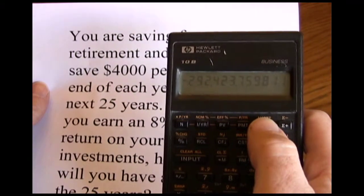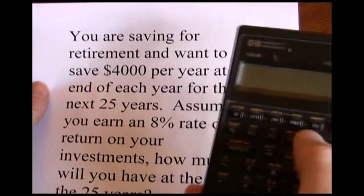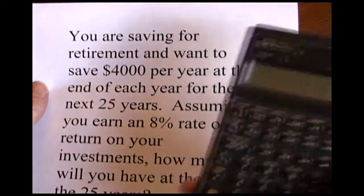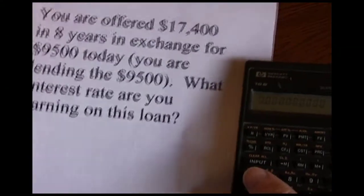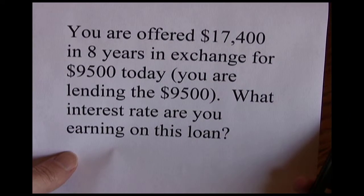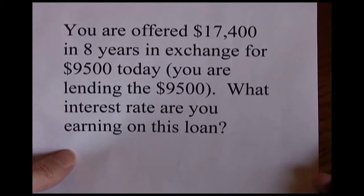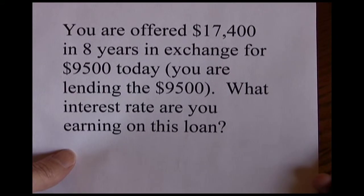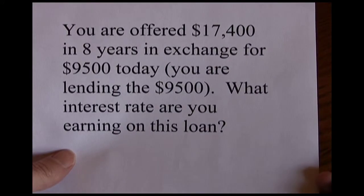We'll have $292,423.76 after the 25 years is up. In our last problem, we're offered $17,400 in eight years in exchange for $9,500 today. In essence, we are lending $9,500 today, we're going to wait eight years, and then receive a single cash flow of $17,400 back. We want to figure out what interest rate we're going to earn on this loan.